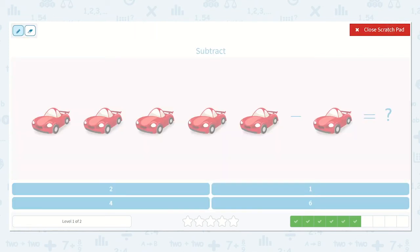Alright, time to subtract. 1, 2, 3, 4, 5. Take away 1. So, I know that this sign means I'm going to take away. So, I'm going to draw 5 and take away 1 of them.